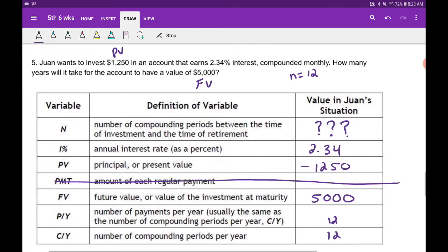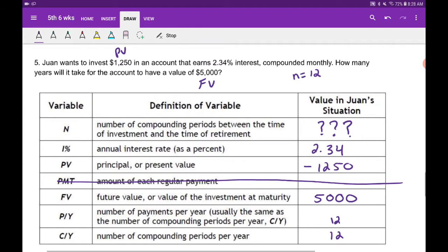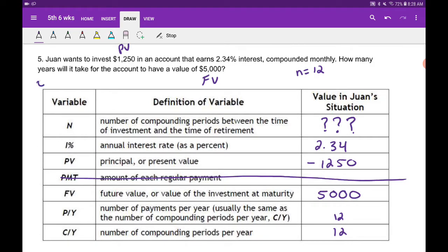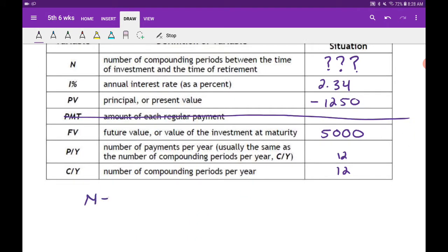He wants to know how long, how many years will it take, so our t is what we're going to look for here. Now, we know that our big N equals our compounds times t, so if we're looking for how many years, this is what we are wanting to find.